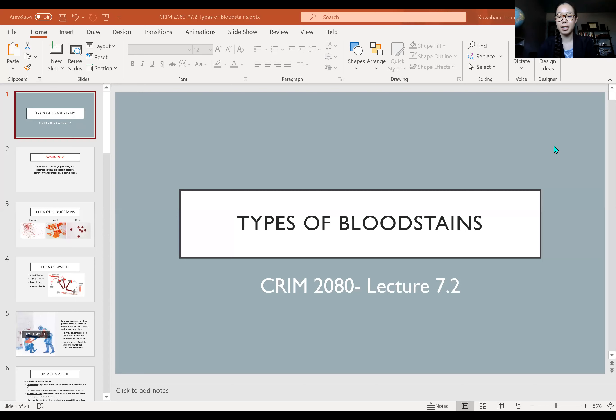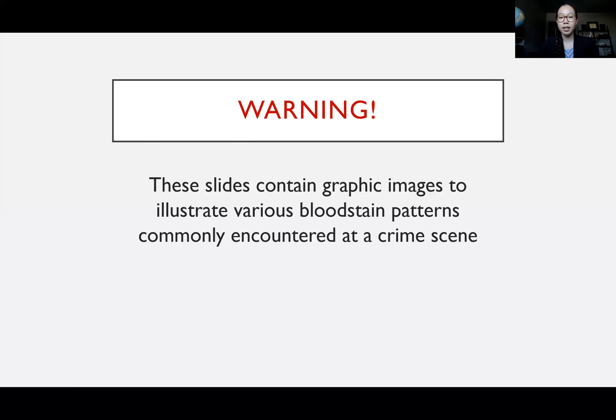Hello everyone. Welcome back to CRM 2080 Introduction to Forensic Science. This is our second video for the Bloodstain Pattern Analysis lecture. In our last one we talked about the different types of information we can obtain by analyzing bloodstain patterns. In this one we're going to talk about the various different types of bloodstains we encounter at a crime scene. Some of these slides are going to have graphic images meant to illustrate the different types of bloodstain patterns we commonly see at a crime scene, so just be warned.